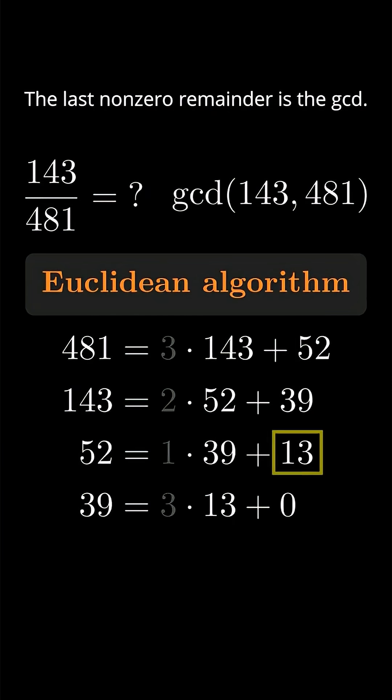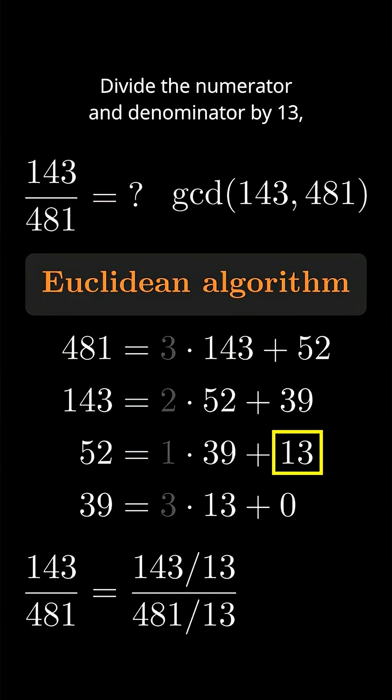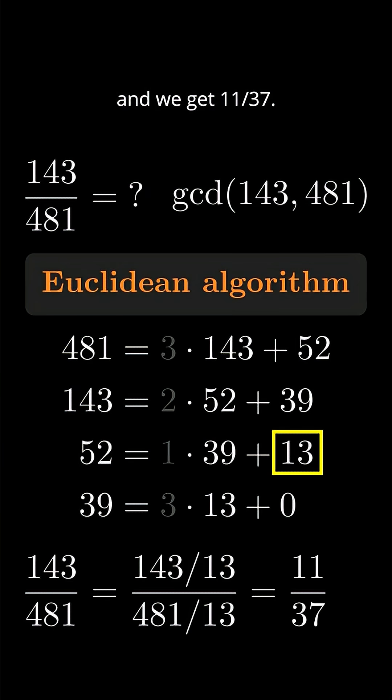What did we get? The last non-zero remainder is the GCD. So how does 143 over 481 simplify? Divide the numerator and denominator by 13, and we get 11 over 37. Great!